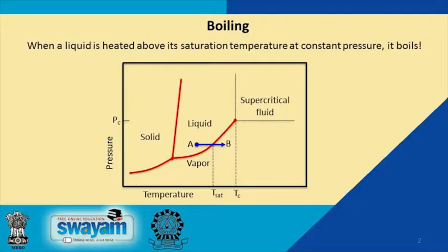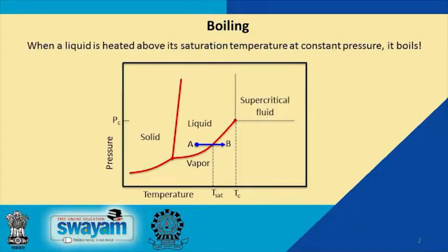For example, when you plot pressure versus temperature you have a solid phase, a liquid phase, and a vapor phase. The red lines demark the phase boundaries where two phases exist at equilibrium. To understand the boiling process, you can start at point A which is in liquid form, and at constant pressure increase the temperature until it touches the phase boundary where vapor starts forming.